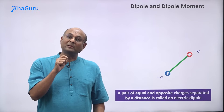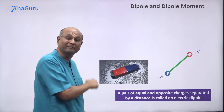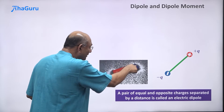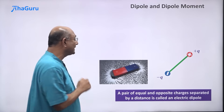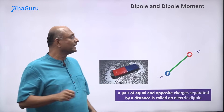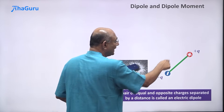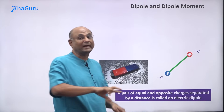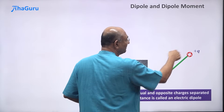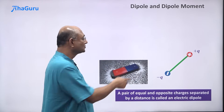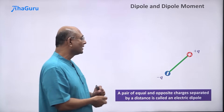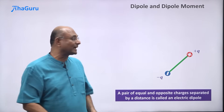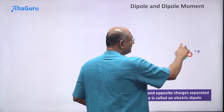We understand the 'electric' part because there are electric charges. The word 'dipole' comes from magnetism — when you look at magnets, you have a north pole and a south pole. The old word for a magnet was magnetic dipole because it has two poles. Similarly, here we have two opposite charges, minus q and plus q, so we call this an electric dipole.